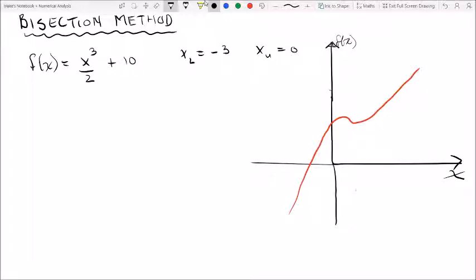First things first, we're going to check out our function: f(x) = x³/2 + 10. Our lower limit is x = -3 and our upper limit is 0, and those are going to be given. So we know that there will be a zero between -3 and 0.